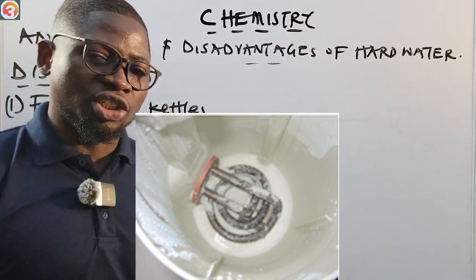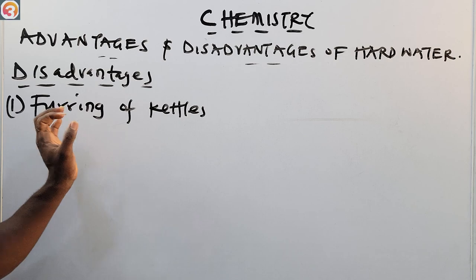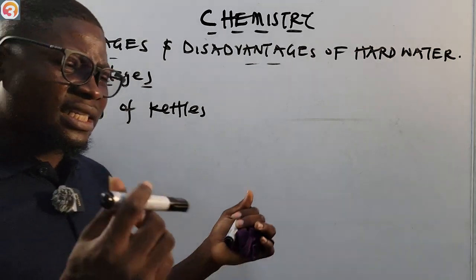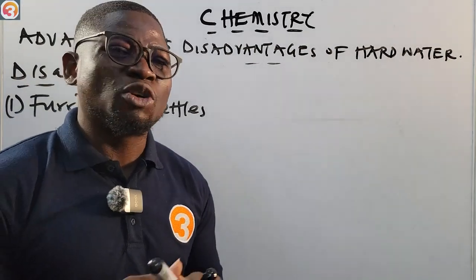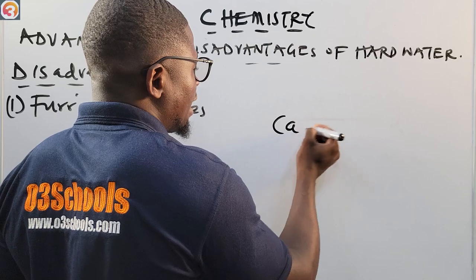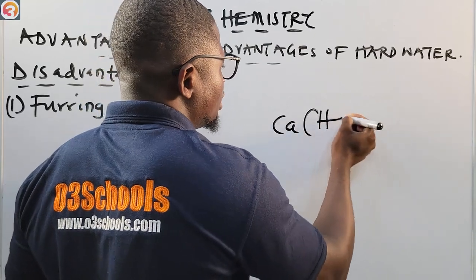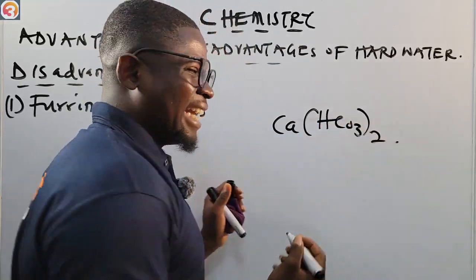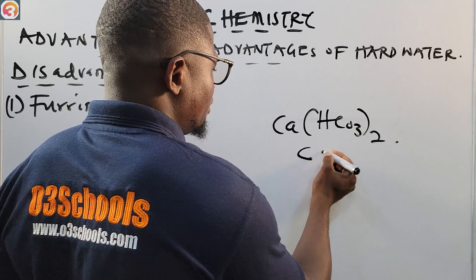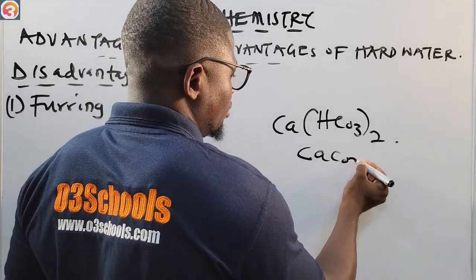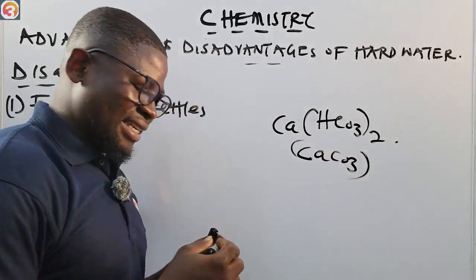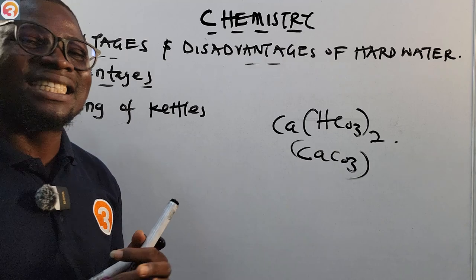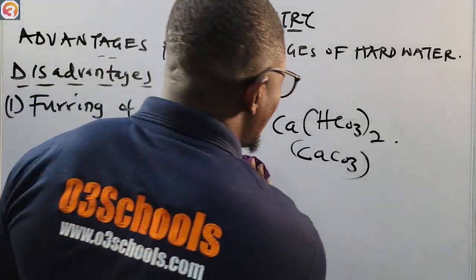Furring of kettles is a disadvantage of hard water because it is formed by the decomposition of calcium hydrogen carbonate, and it leaves a deposit of CaCO₃. So furring of kettles is a disadvantage of hard water.